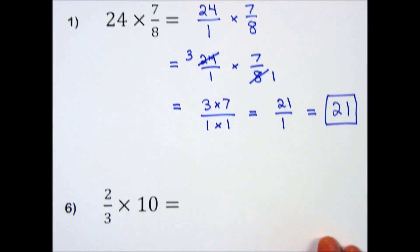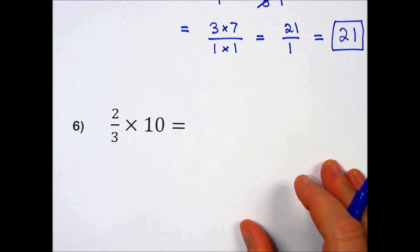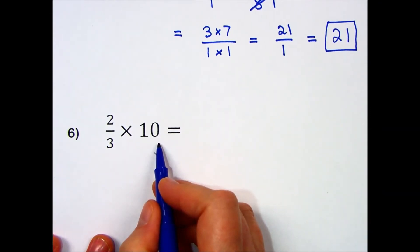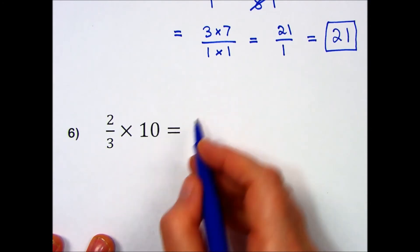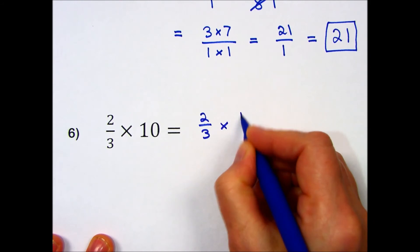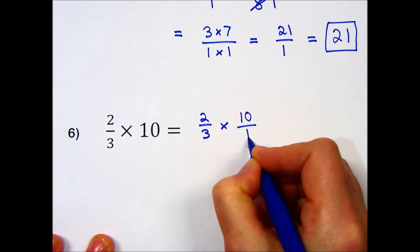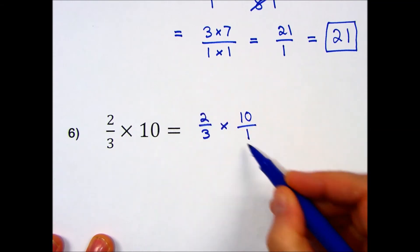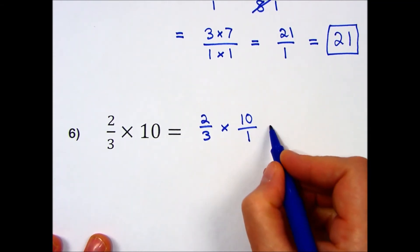We'll do one more together where the whole number is actually second in the multiplication. Again, I'm going to change 10 into a fraction by writing a denominator of 1 underneath it: 2/3 times 10 over 1. I don't see any factors that can be cancelled along these diagonals, so I'll finish up.